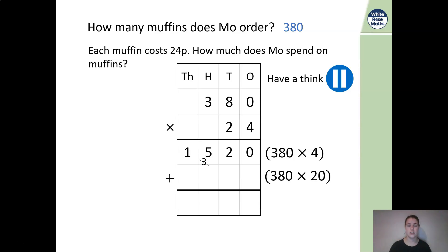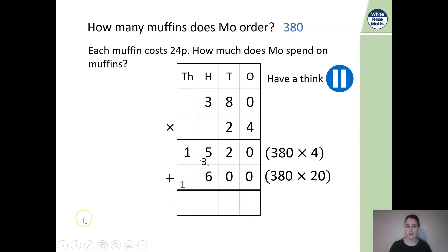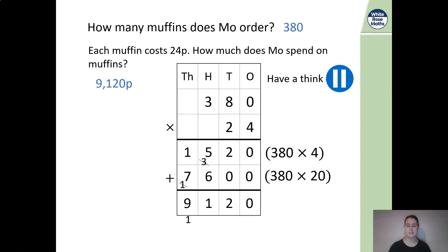Our next sum is 380 multiplied by 20. We need our place value. So 2 times 8 is 16 — put the 1 down and carry, write our 6. Then 2 multiplied by 3: 2 lots of 300 gives 600, but we add that additional 1 carried, which gives 700. All I need to do now is add my numbers together: we have 0, then 2, then 6 and 5 is 11 — carry that 1, answer is 1 there, add the 1. 1 add 7 is 8. Adding that additional 1 for the thousands gives 9,000. So Moe spends 9,120p on muffins.